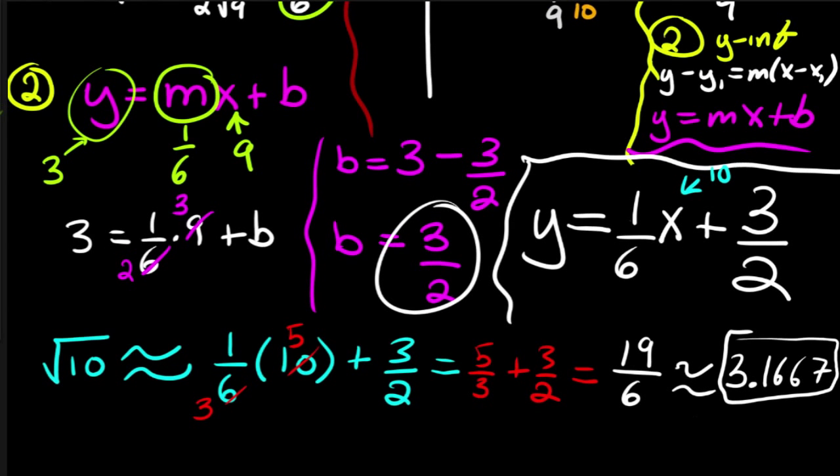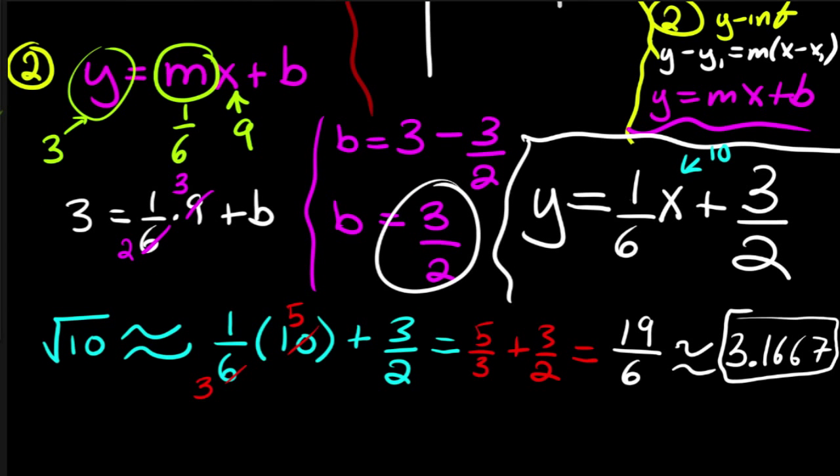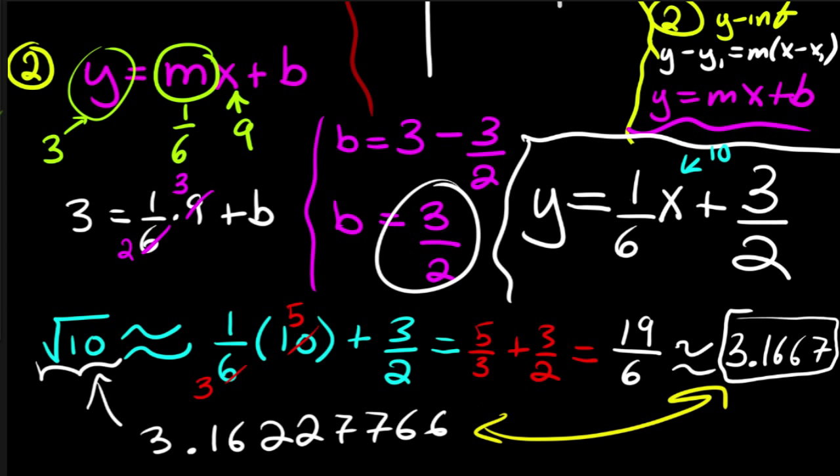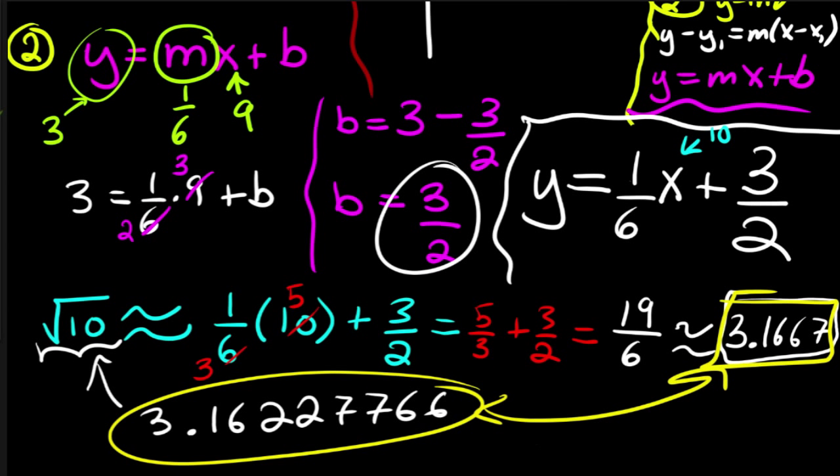Now if you punch in the square root of 10 into your calculator, if you punch this guy into your calculator, you get 3.162277666. Now, my question to you is how close are these? Well, I think it's pretty obvious that they are pretty close indeed.